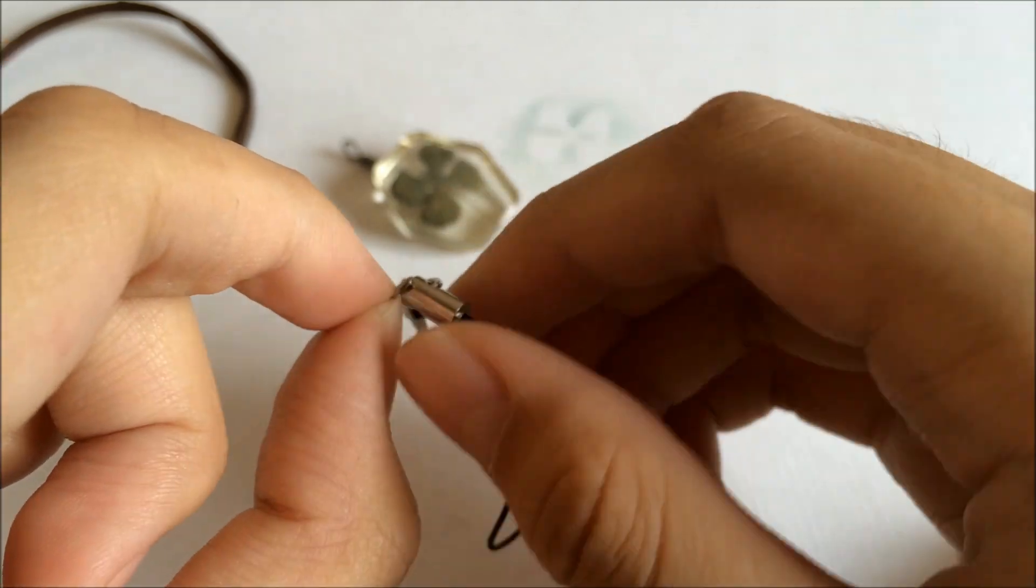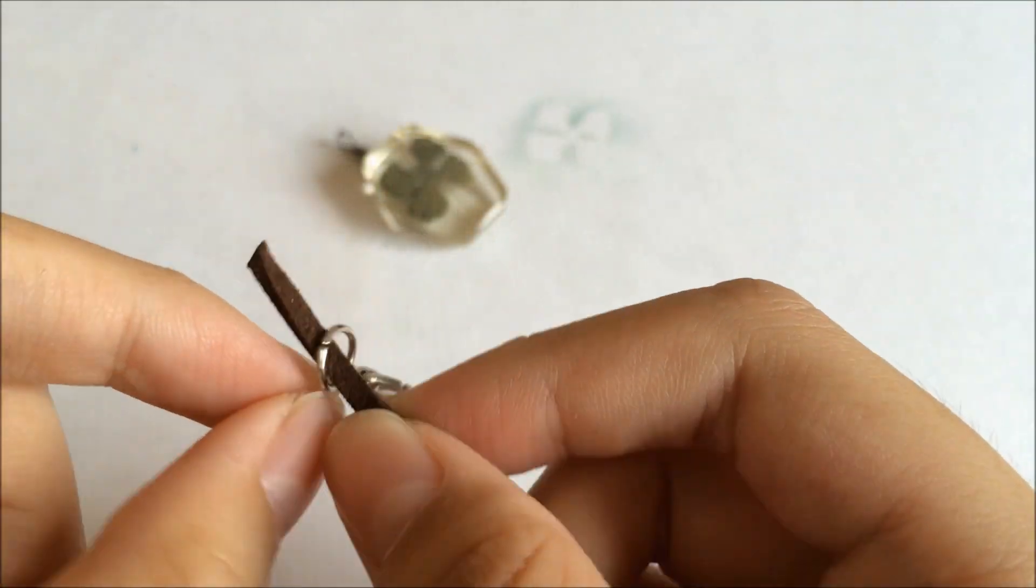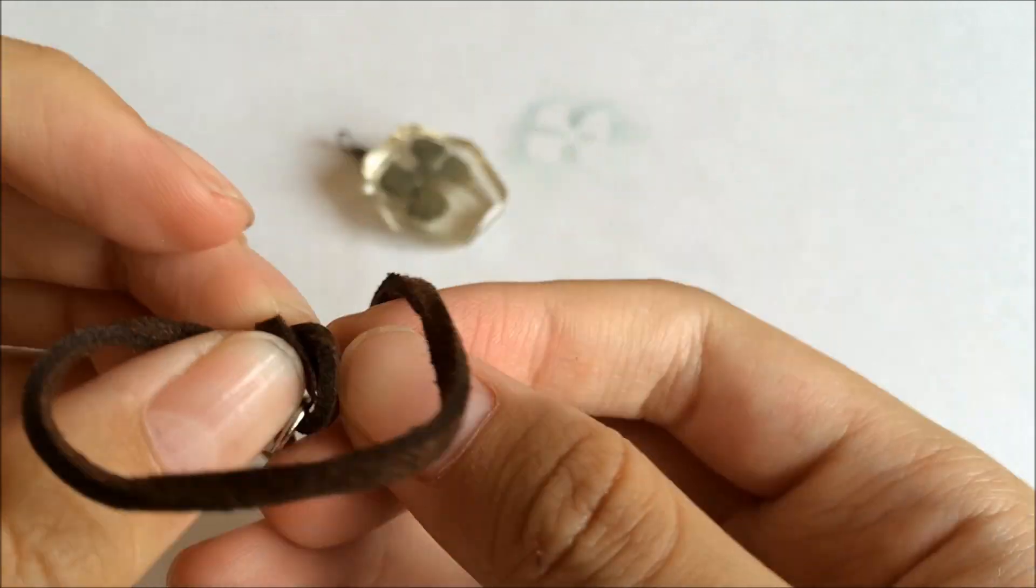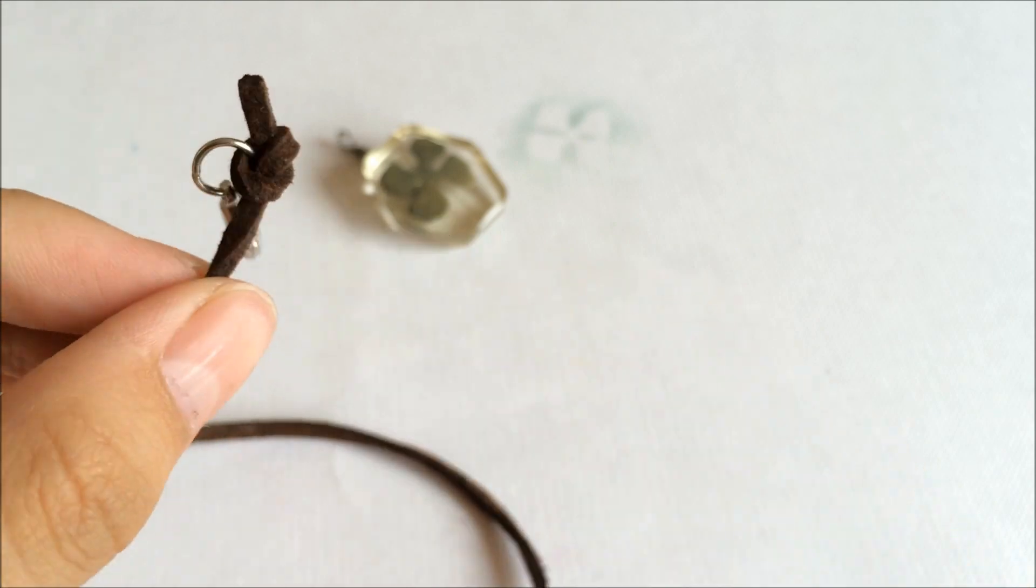Also, I'll be using lobster clasps, but I don't have one, so I'm using the one from cell phone straps instead. I just removed it from the extra straps and tie it to the end of the string really tightly and cut off the excess afterwards.